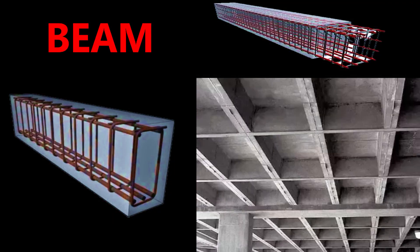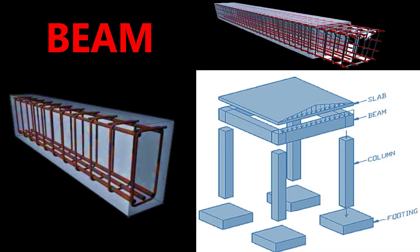A beam is a basic structural element which is constructed in almost all types of buildings. It is a horizontal flexural member which has one dimension considerably larger than the other two dimensions, and is supported at few points. Based on the support conditions, beams are classified into different types.